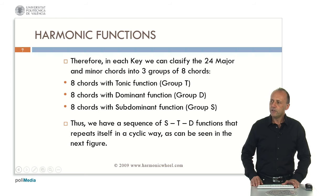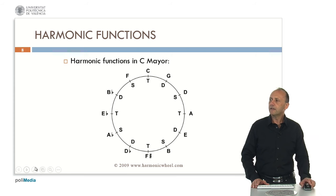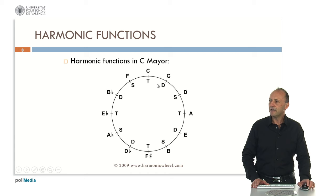If we represent this sequence — subdominant, tonic, dominant — on a cycle of fifths, we will find: subdominant F, tonic C, dominant G, and then the same sequence S, T, D repeating around the cycle.